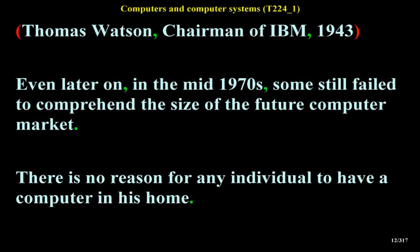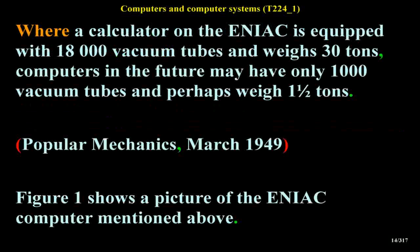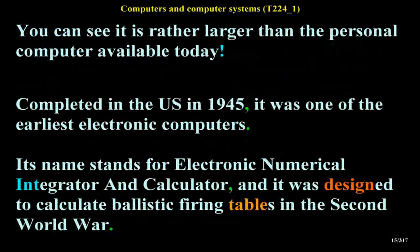Even later, in the mid-1970s, some still failed to comprehend the size of the future computer market. Ken Olson, president of Digital Equipment Corporation, said: 'There is no reason for any individual to have a computer in his home.' And although a diminution in size was anticipated, it was considerably underestimated. Popular Mechanics in March 1949 predicted: 'Where a calculator on the ENIAC is equipped with 18,000 vacuum tubes and weighs 30 tons, computers in the future may have only 1,000 vacuum tubes and perhaps weigh 1 ton.' Figure 1 shows a picture of the ENIAC computer mentioned above.